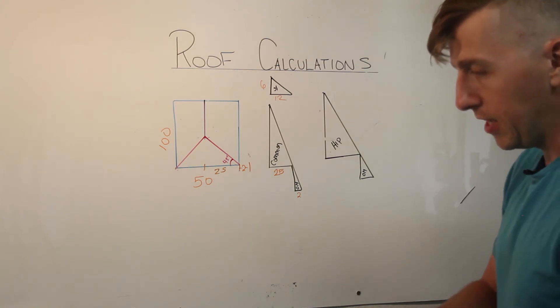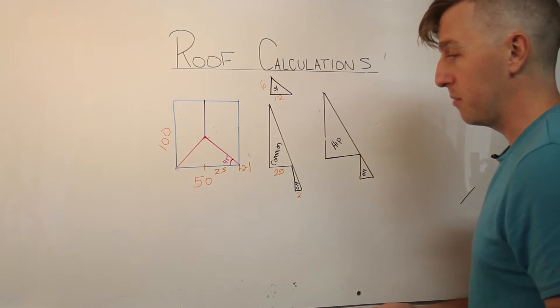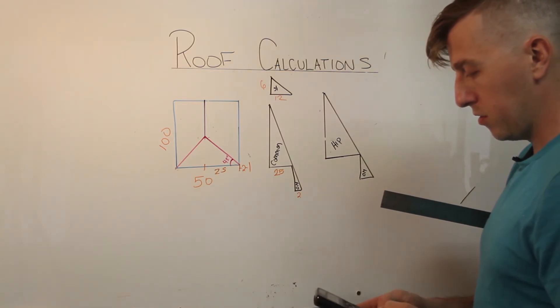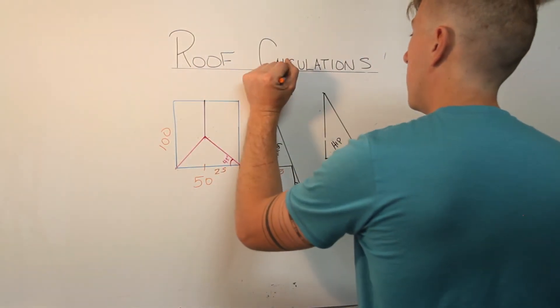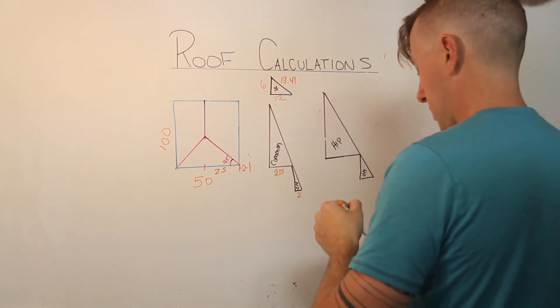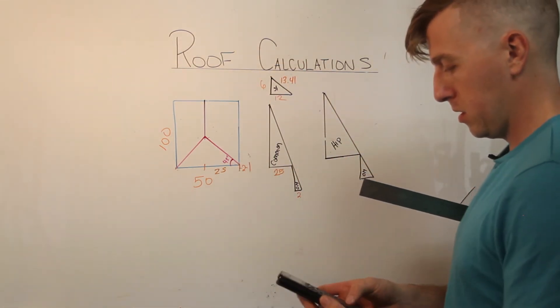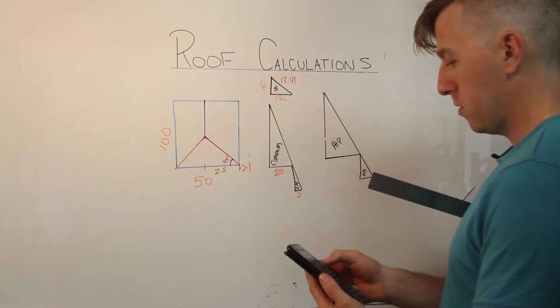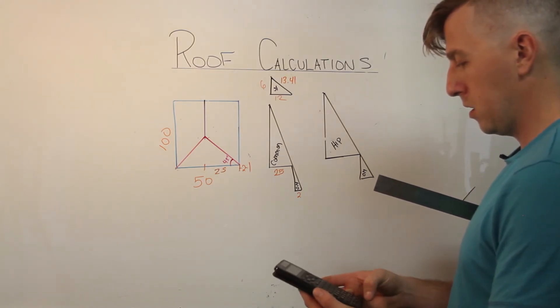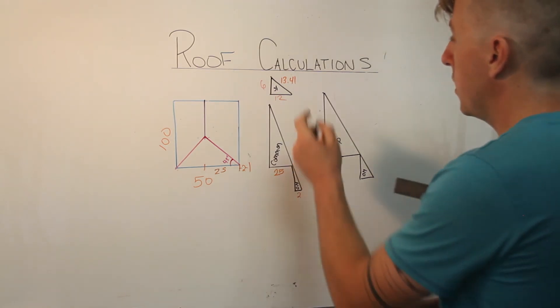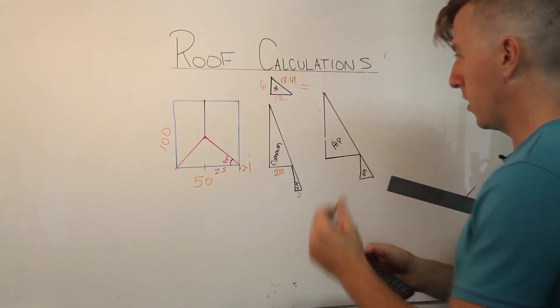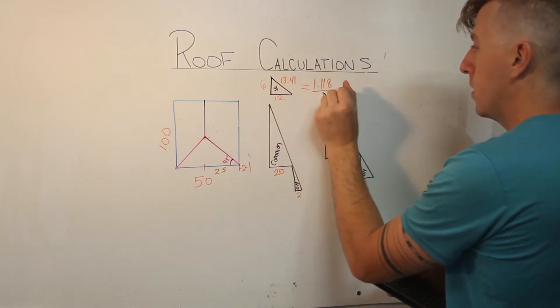So the first thing that I'm going to do here is solve for my slope gain, so that I can keep this as simple as possible. So I'll do Pythagoras Theorem to solve this triangle. 13.41. I'm just going to double check because I'm paranoid. 6 squared plus 12 squared equals 180. Okay, 13.41. So my slope gain, I'm going to divide 13.41 by 12, is 1.118. That's my slope gain.